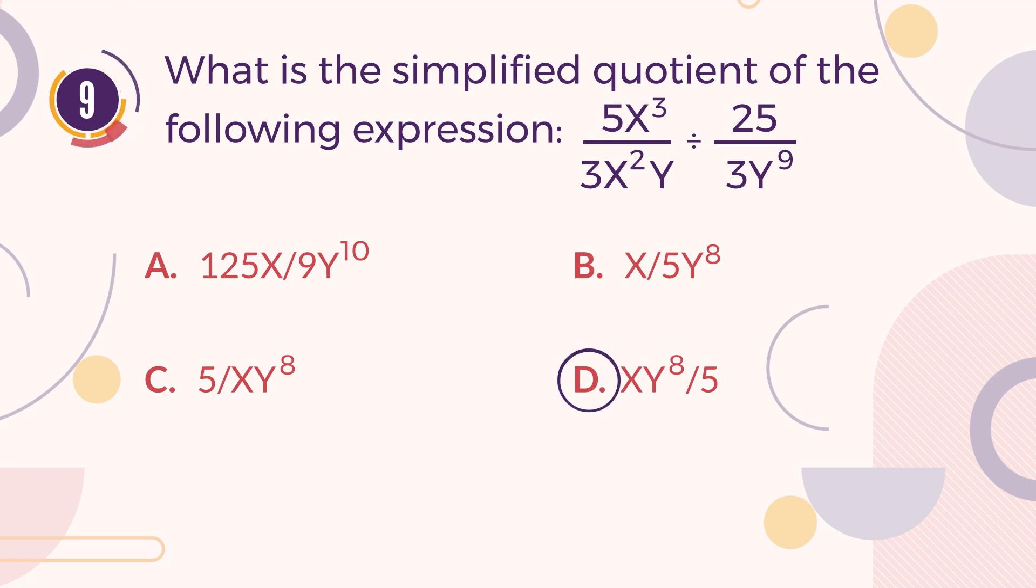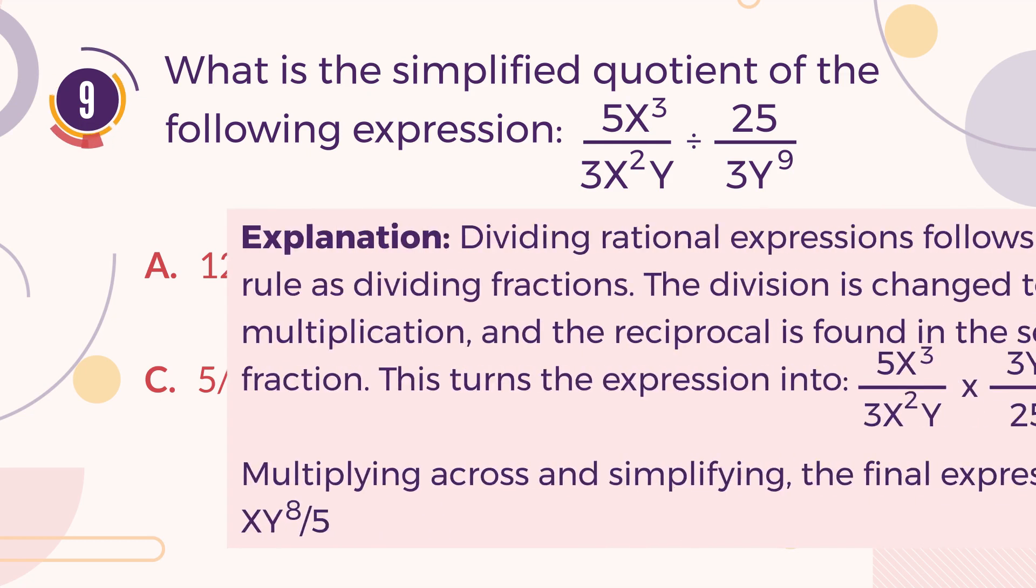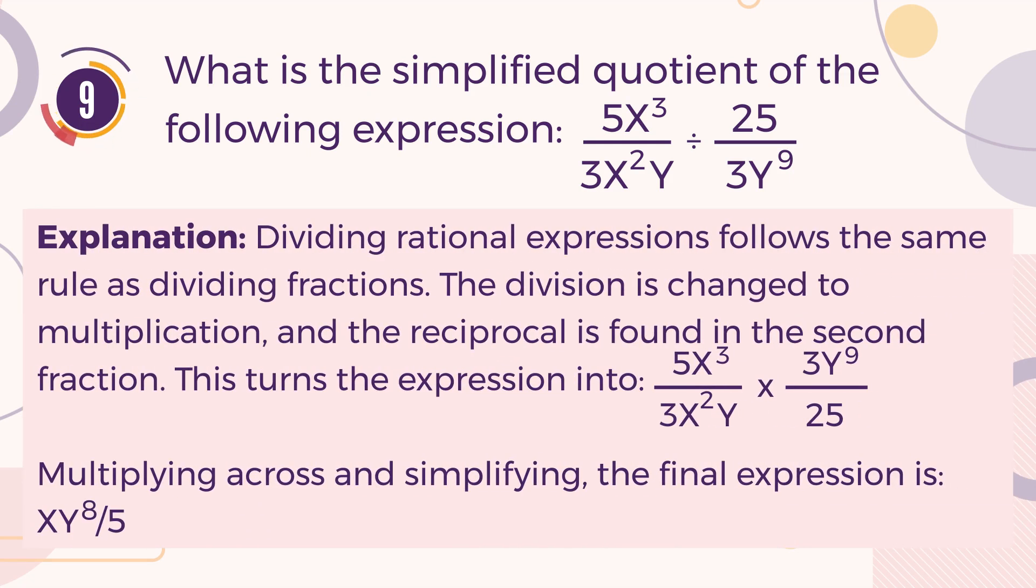The correct answer is D. X times Y to the power of 8 divided by 5. Explanation. Dividing rational expressions follows the same rule as dividing fractions. The division is changed to multiplication, and the reciprocal is found in the second fraction. This turns the expression into: 5 times X cubed divided by 3 times X squared, multiplied by 3 times Y to the power of 9 divided by 25. Then multiplying across and simplifying, the final expression is X times Y to the power of 8 divided by 5.